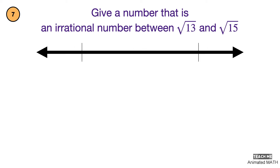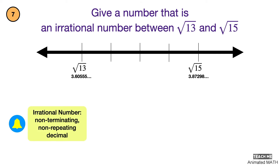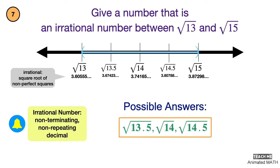Irrational numbers are non-terminating and non-repeating decimals. They cannot be expressed as a ratio of two integers. Examples of irrational numbers are square roots of non-perfect squares. For this interval, possible answers are square root of 14, square root of 13.5, or square root of 14.5.